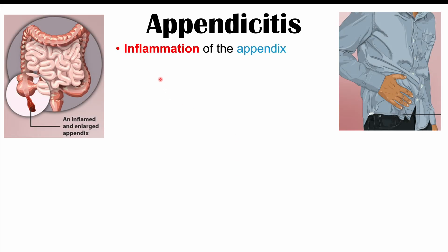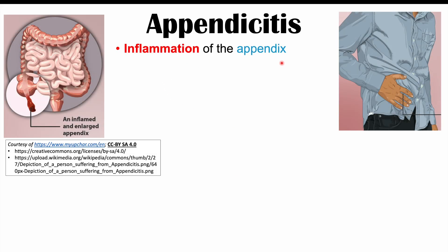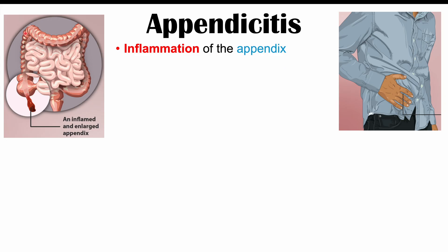Appendicitis is an inflammation of the appendix. If we look at this image here, here is the small intestines and here is the large intestine. The first part of the large intestine is where the appendix is going to be located. The appendix juts off the first part of the large intestine, and this is what's going to become inflamed and cause issues in appendicitis.